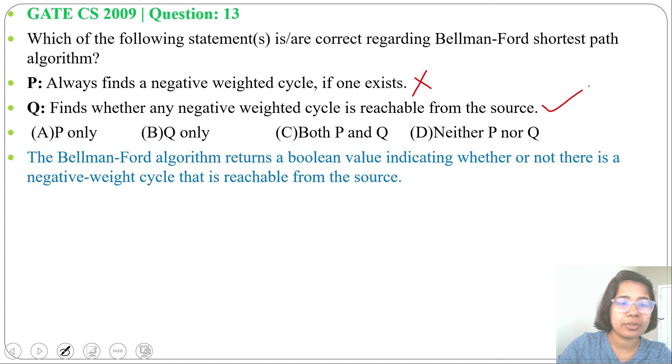So P is false, Q is true. The Bellman-Ford shortest path algorithm can find the shortest path if negative weights are present. But if negative weighted cycles are present that are reachable from the source, then it cannot find the shortest path.